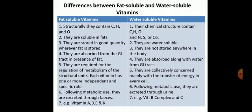Fat-soluble vitamins are absorbed from the gastrointestinal tract in the presence of fats, while water-soluble vitamins are absorbed along with water from the gastrointestinal tract. Fat-soluble vitamins are required for regulation of metabolism of structural units, with each vitamin having one or more independent and specific roles. Fat-soluble vitamins are excreted through the feces, whereas water-soluble vitamins are excreted through the urine.